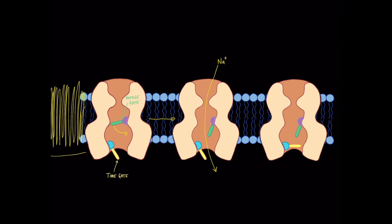You'll notice that on the channel on the left — the resting position — the voltage gate is closed and the time gate is open. The voltage gate then experiences the voltage change of the muscle membrane caused by depolarization at the neuromuscular junction. The voltage gate opens, and now we have an open voltage gate and an open time gate, which allows sodium to rush down the membrane and cause depolarization of the muscle membrane.